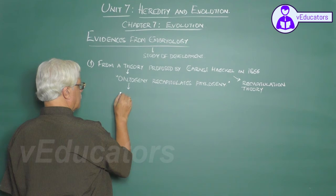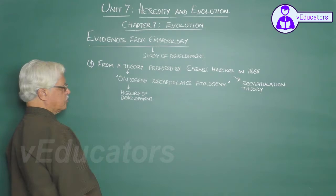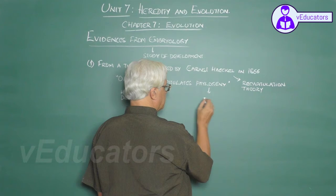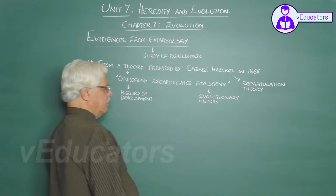What is ontogeny? Ontogeny is the history of development — the study of developmental stages. What is phylogeny? Phylogeny is the evolutionary history of an organism.